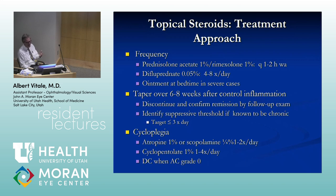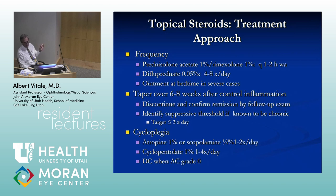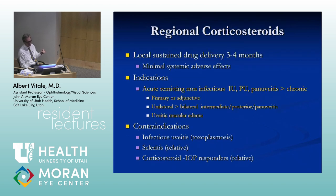You start out with high-frequency drops and taper over about six to eight weeks. We frequently employ cycloplegia in cases of anterior uveitis for patient comfort, to avoid ciliary body spasm, and also to prevent synechiae. I prefer to use a shorter-acting cycloplegic such as homatropine or cyclopentolate to move the pupil rather than keep it in a fixed dilated position, where synechiae would be more apt to form.